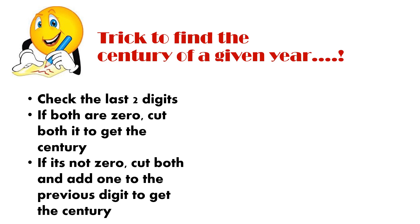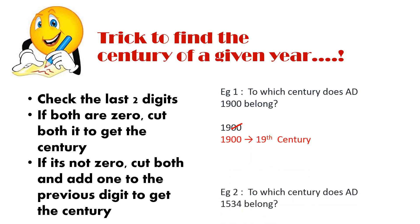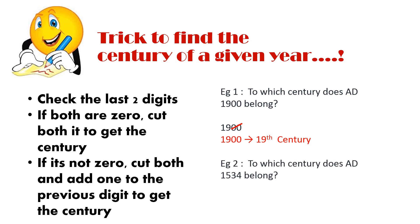To find the century, check the last two digits. If both are zeros, cut them and the remaining number is the century number. For example, AD 1900 ends in two zeros — cut them and 19 remains, so 1900 belongs to the 19th century. For 1534, the last two digits are not zeros, so we cut them and add one to 15, giving the 16th century.